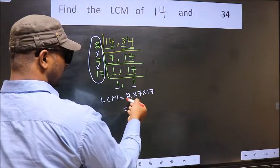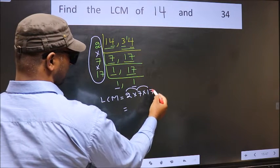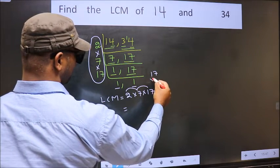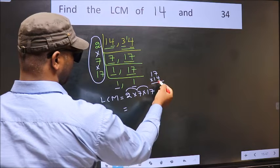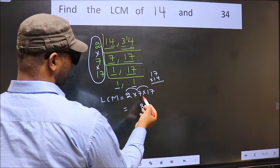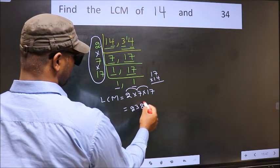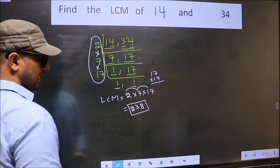So, let us multiply these numbers. 2 into 7, 14 into 17. 14 into 7, 98, 8, 9, 14 plus, 14 into 1, 14 plus 9, 23. So, 238 is our LCM.